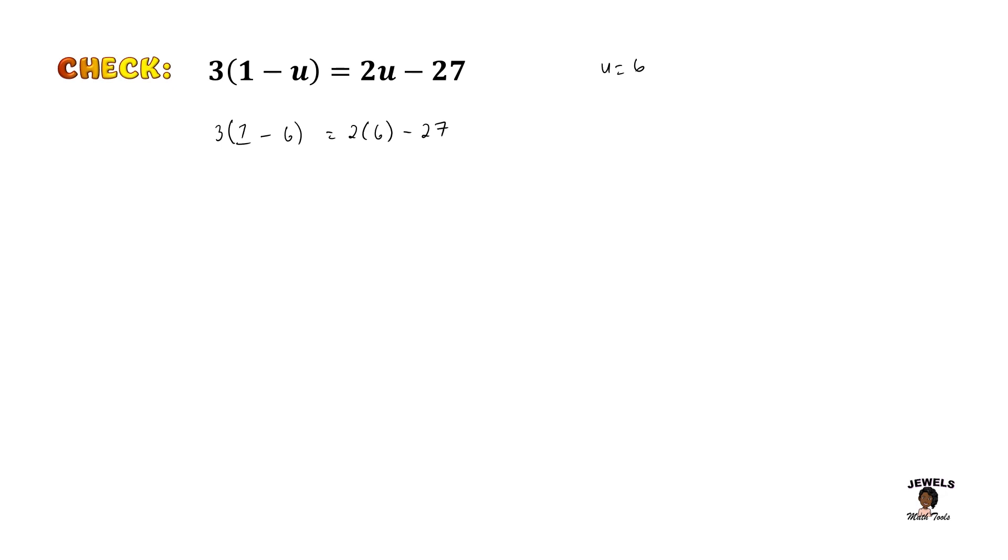And just like before, I want to do all of the working within the question. So 3 times 1 will equal 3. 3 times negative 6 will equal negative 18. 2 times 6 is equal to 12. And 12 when it minus 27 will give us a negative 15. And when 3 minus 18, this will also give us a negative 15.